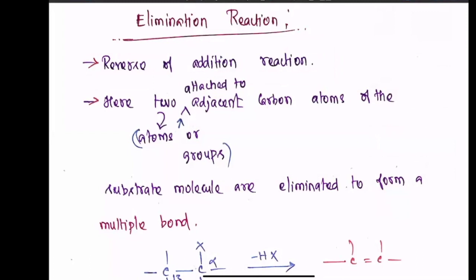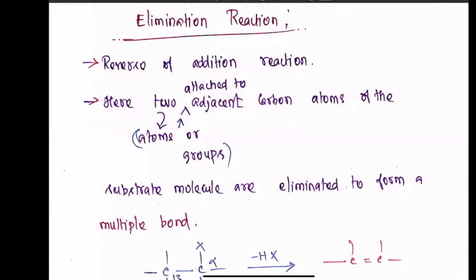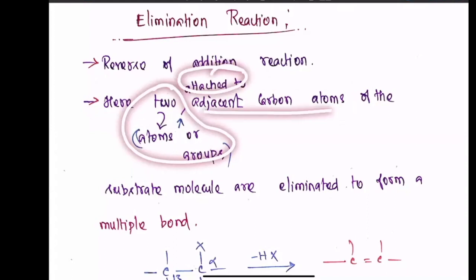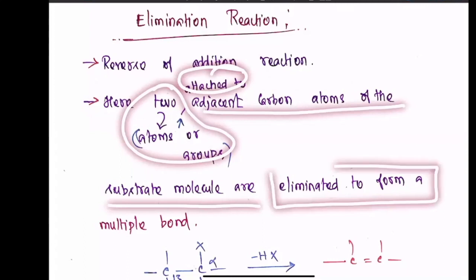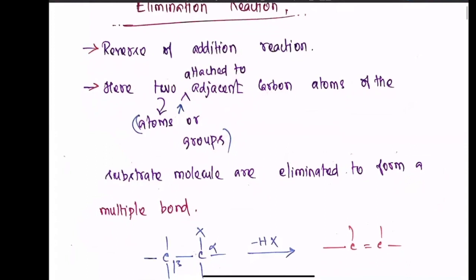In an elimination reaction, two atoms or groups are removed from adjacent carbon atoms of the substrate molecule to form multiple bonds — either a double bond or a triple bond.